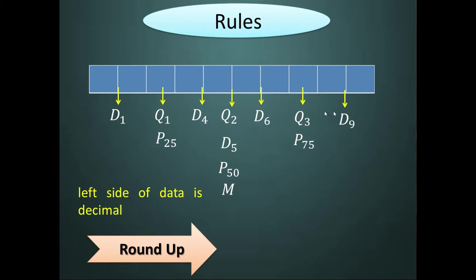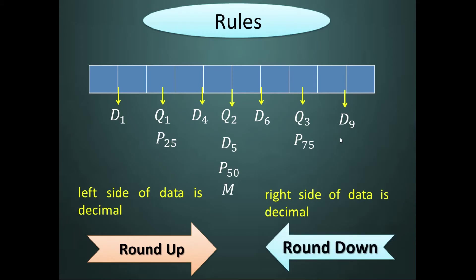We also know that measures of position such as D sub 6, Q sub 3, P sub 75, and D sub 9 are above or greater than 50% of the data. If the result is a decimal for these, the rule is to round down. For example, if D sub 7 = 8.5, since D sub 7 is above 50%, we round down: 8.5 becomes 8, so the location is the 8th data.